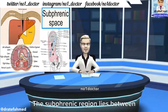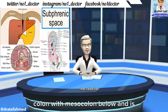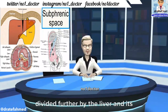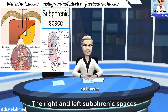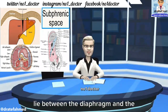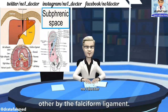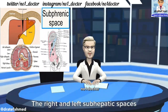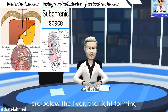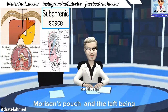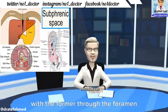The subphrenic region lies between the diaphragm above and the transverse colon with mesocolon below, and is divided further by the liver and its ligaments. The right and left subphrenic spaces lie between the diaphragm and the liver, and are separated from each other by the falciform ligament. The right and left subhepatic spaces are below the liver, the right forming Morrison's pouch and the left being the lesser sac, which communicates with the former through the foramen of Winslow.